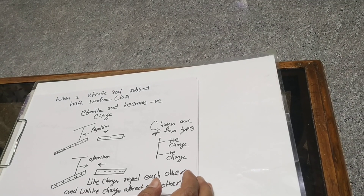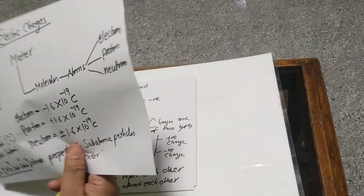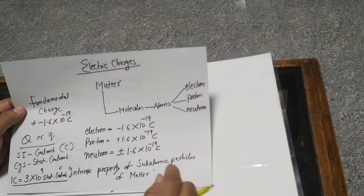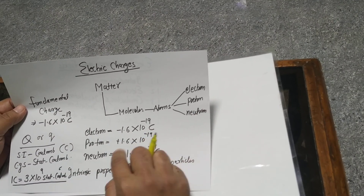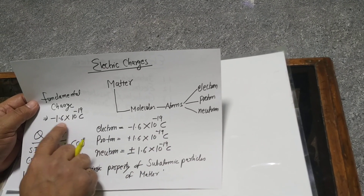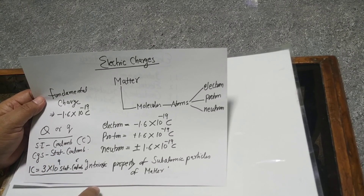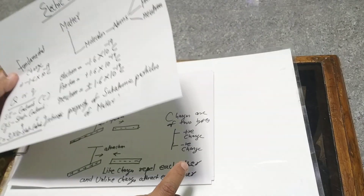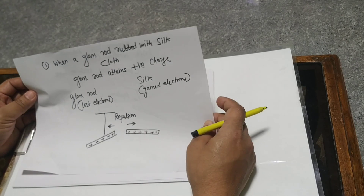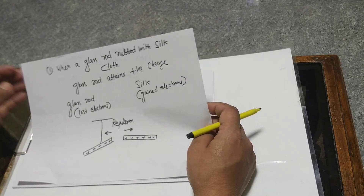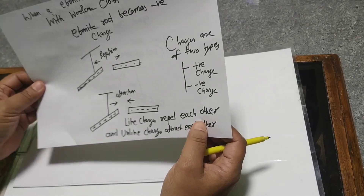To summarize the electric charges: matter → molecules → atoms → three types of subatomic particles: electron (negative), proton (positive), neutron (neutral). The fundamental charge is the charge of the electron, represented by Q or q in coulombs. CGS unit is stat coulomb. They are the intrinsic property of subatomic particles of matter. A glass rod rubbed with silk attains positive charge (loses electrons); an ebonite rod rubbed with woolen cloth attains negative charge.